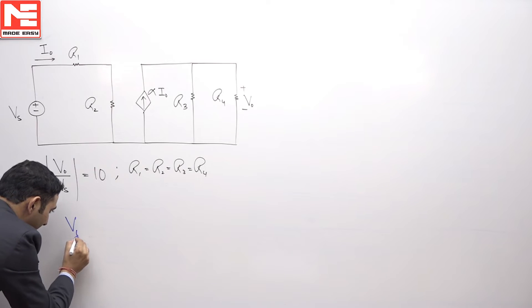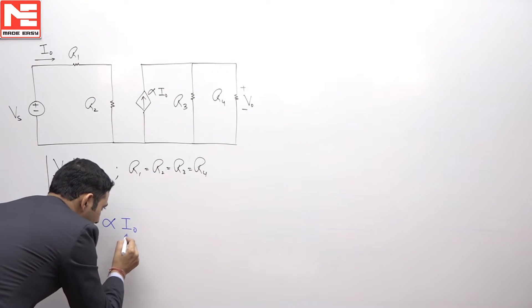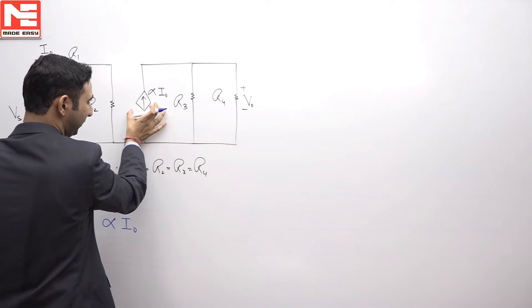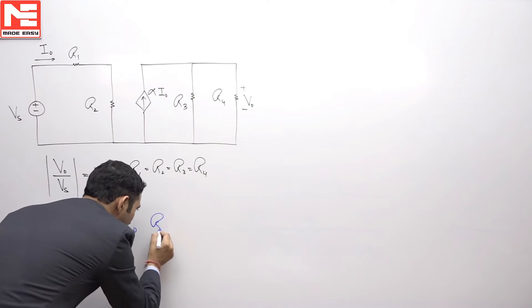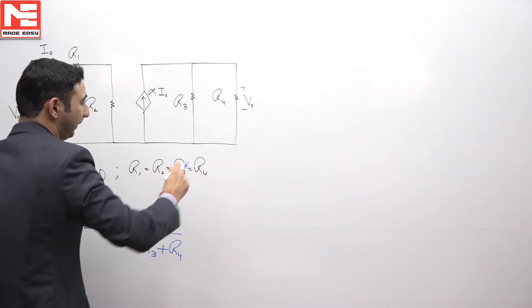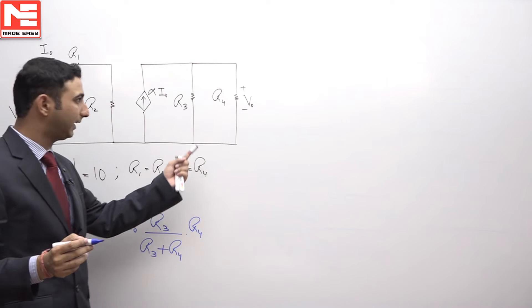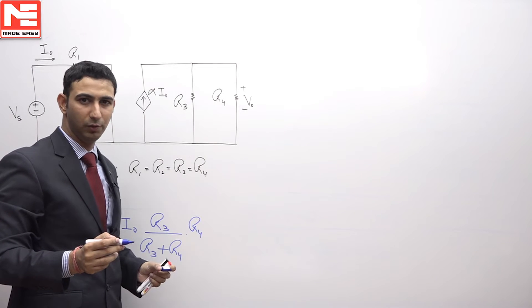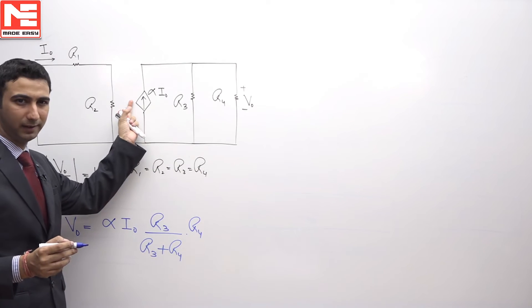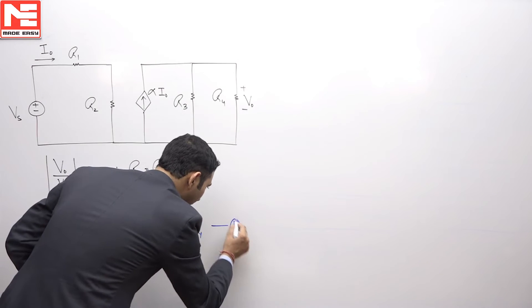You can see from here V naught, this will be equal to alpha I naught. If I calculate the current that is getting divided in this branch, it will be by using the current division rule alpha I naught multiplied by R3 divided by R3 plus R4. Then multiplied by this resistance that is R4. And also if you see first, if I calculate the parallel combination of these two, it will be R3 into R4 divided by R3 plus R4, that is this value multiplied by the current because these two are in parallel. So the same answer you will be getting. So this is the V naught I am getting, let us say this is equation number 1.